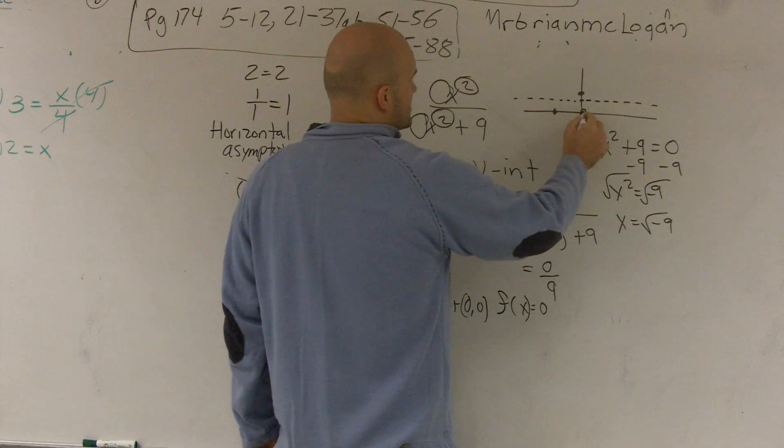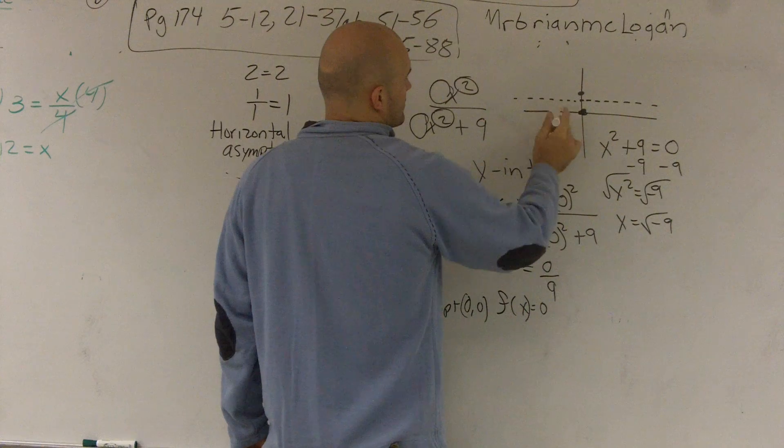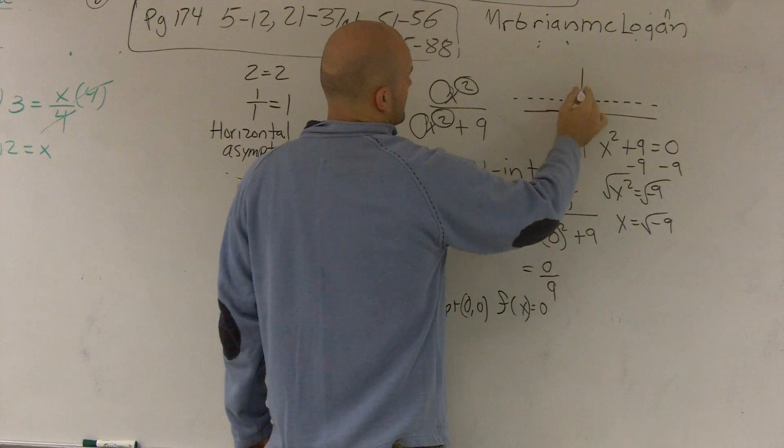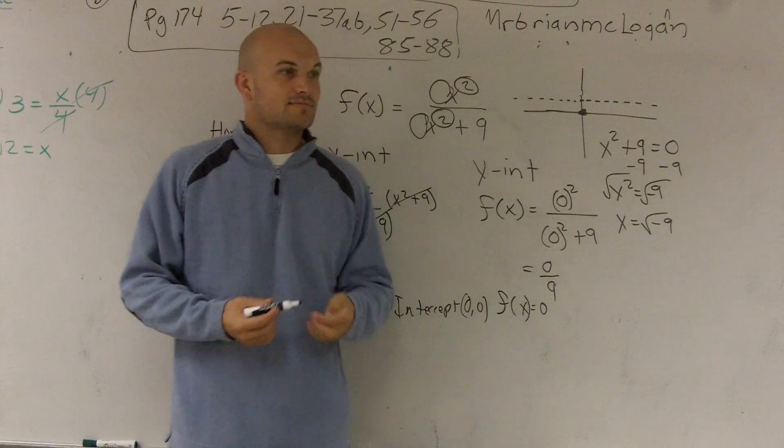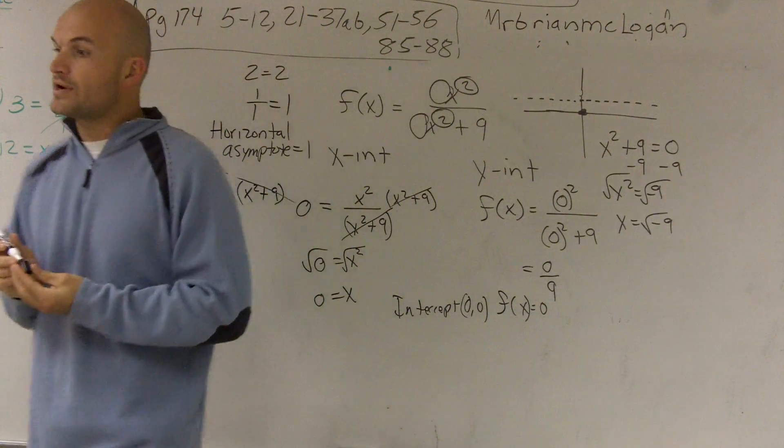And we do know also that the intercept intersects right there. So the only thing we know is my graph is going to intersect right there and it's never going to touch that line. That's all we know for right now.